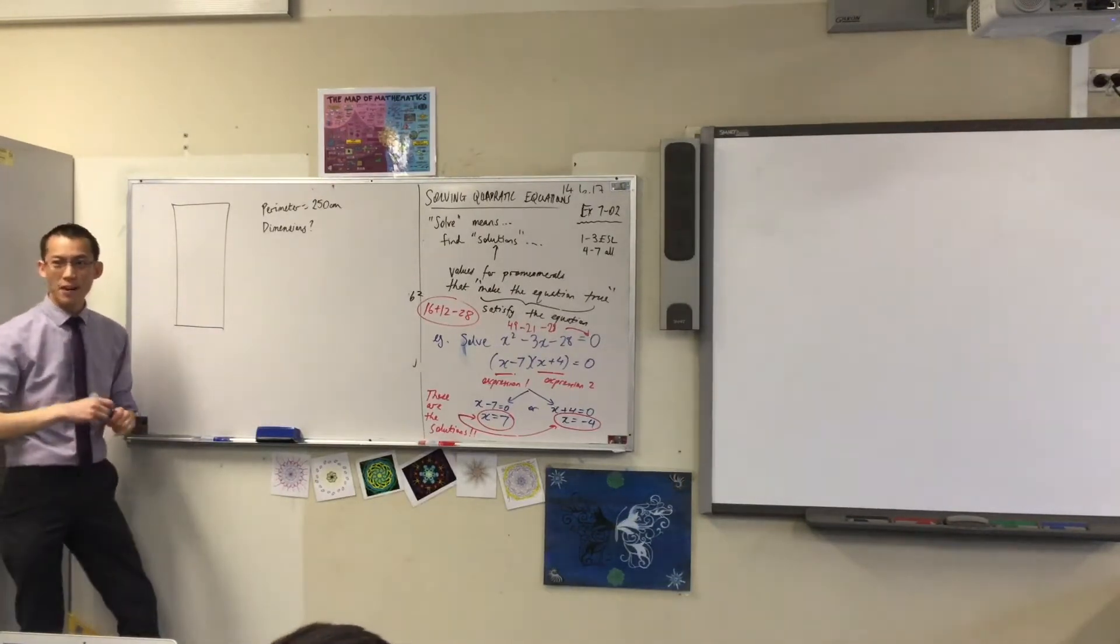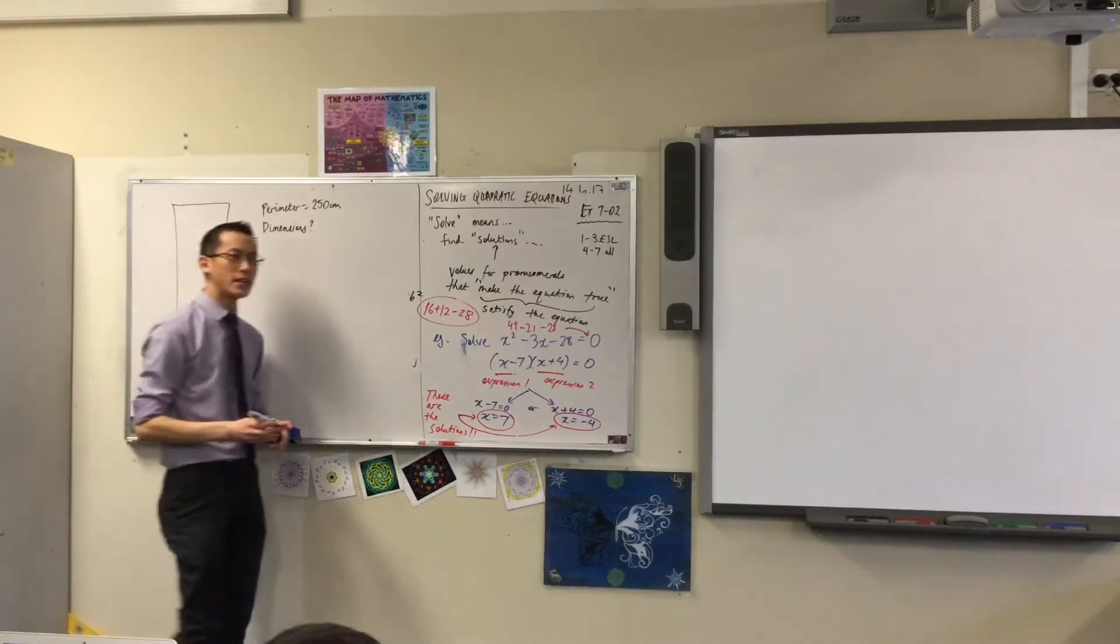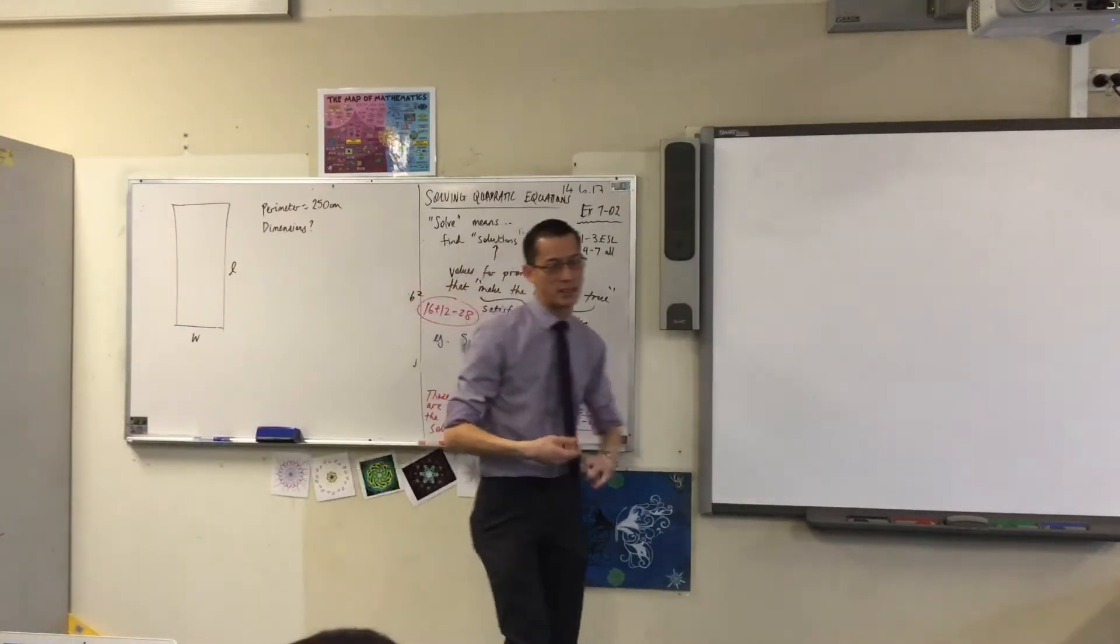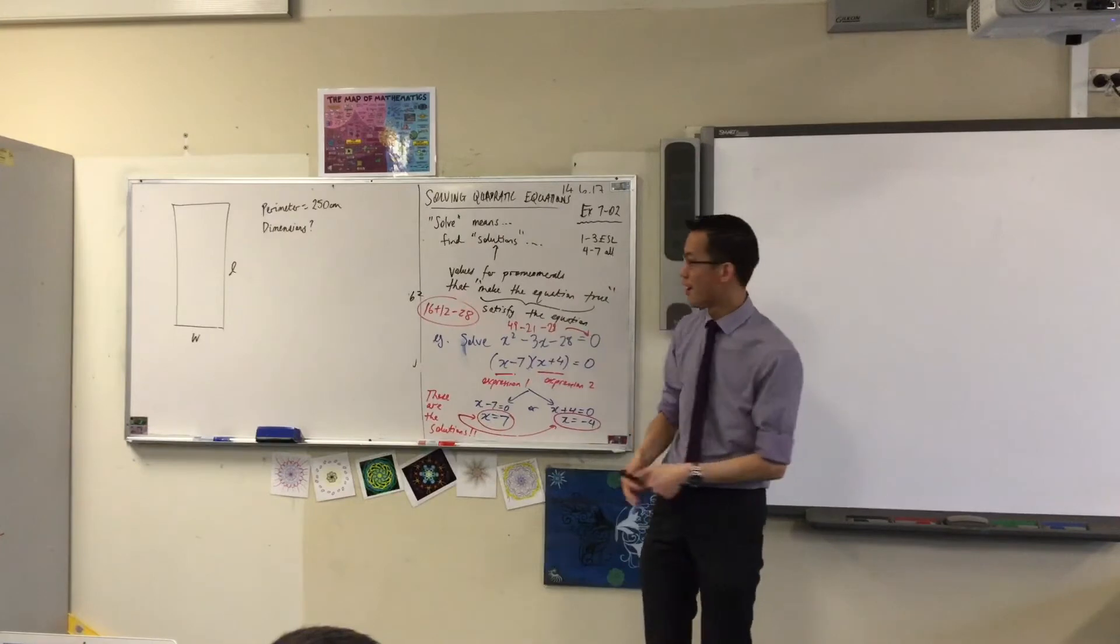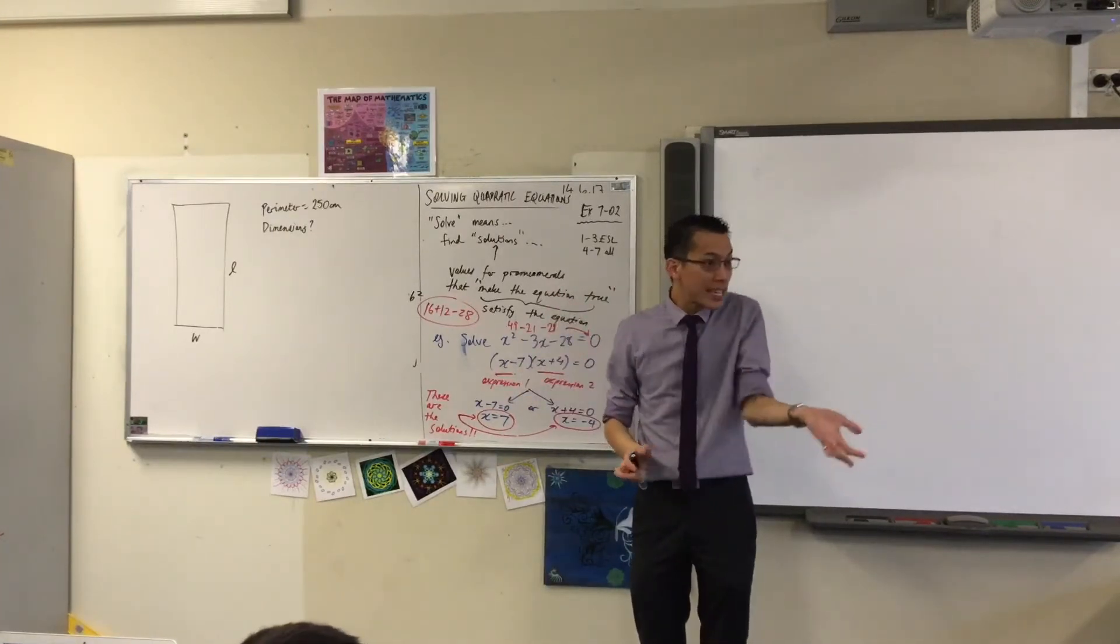Now, instinctively, I could say length and width. But here's a principle for you in mathematics. If you can do things simpler, writing, like introducing less letters and pronouns, that's easier to work with, right?